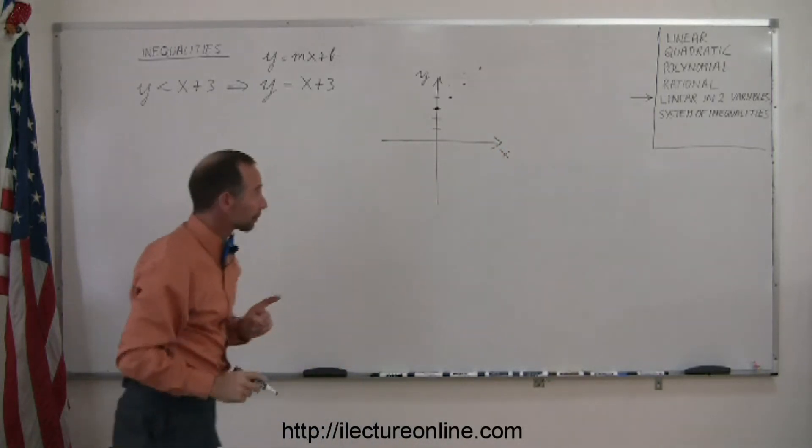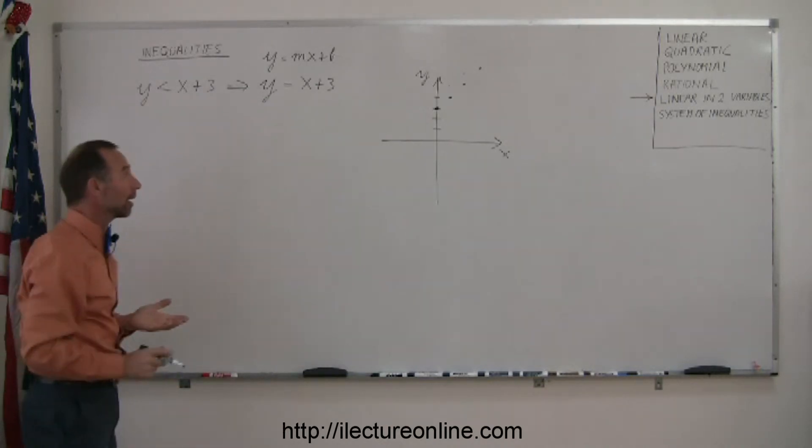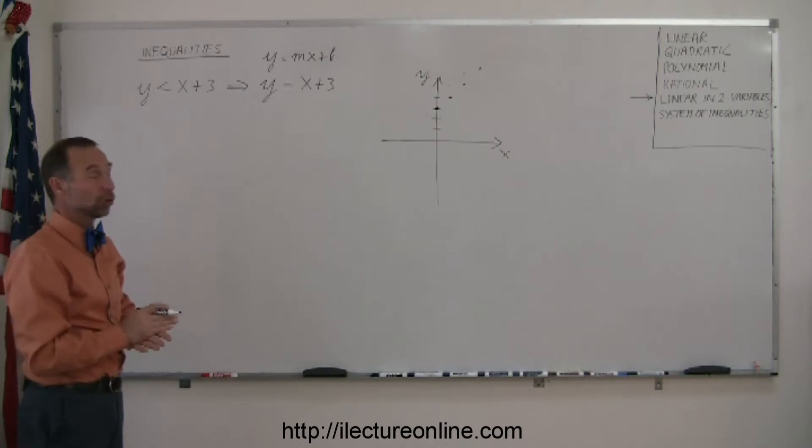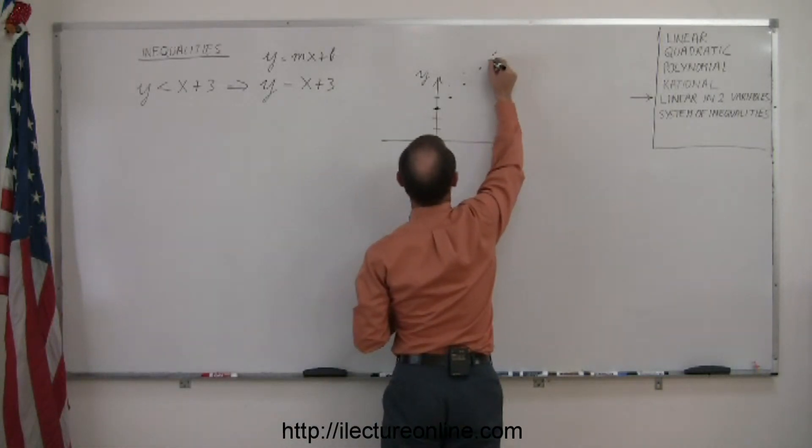Now, be careful here. Since there's not an equal sign here, only a less than sign, that means the boundary is not part of your solution. To indicate that, instead of drawing a solid line, we're going to draw a dashed line.